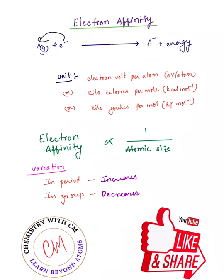When an electron is added to an atom, it turns into an anion. The unit for this is electron volt per atom, kilocalories per mole, or kilojoules per mole.